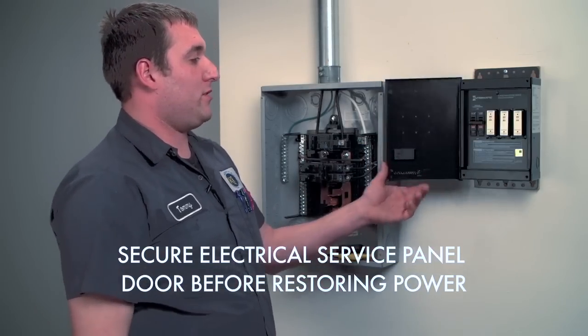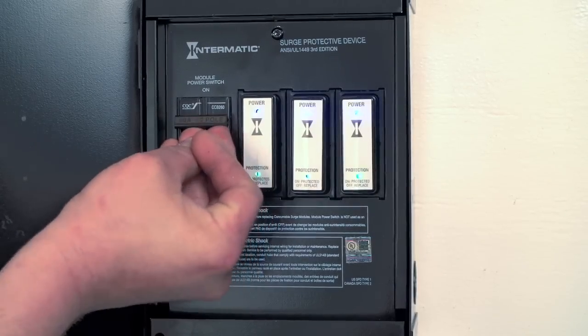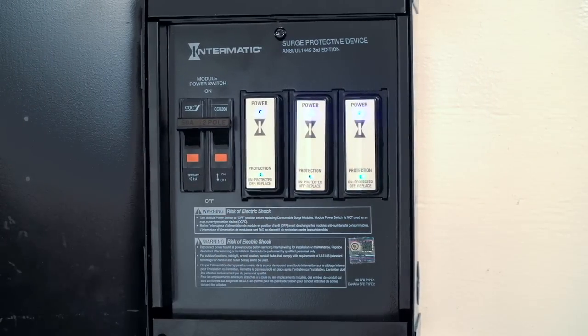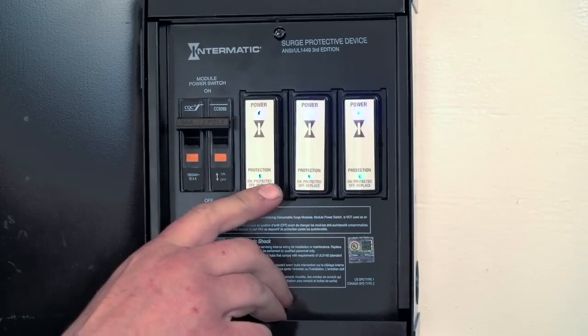Now once we go over to the device, you can go and turn on your module power switch. The blue lights indicate that the power is on. The green lights indicate that your system is protected.